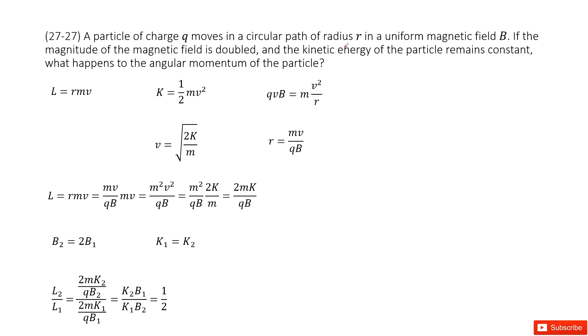It tells you if the magnitude for the magnetic field is doubled, the kinetic energy remains constant. What happens to angular momentum? Things become a little bit complicated, but I think we can work it out together.